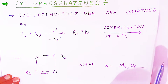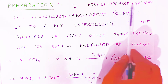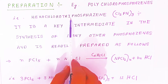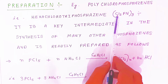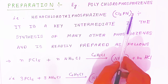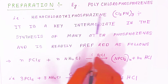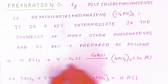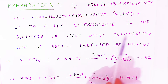Now, how are you going to prepare polychlorophosphazenes? That is hexachlorotriphosphazene. This compound has 6 chlorines and 3 nitrogen atoms, so we call it hexachlorotriphosphazene. The formula is Cl2PN3, and it is a key intermediate in the synthesis of many other phosphazenes.